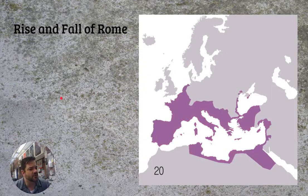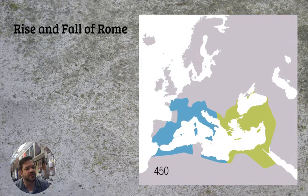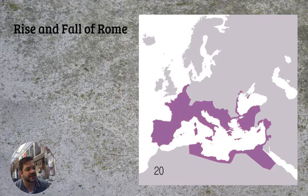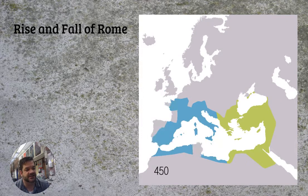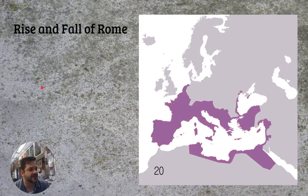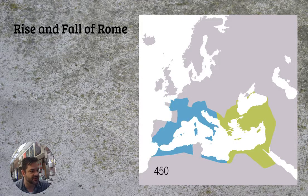The rise of Rome looks something like this. When it changes from red to purple, that's when it changes to the empire. Here's the Republic, the Republic, the Republic, then the empire — and then the empire is going to split as it declines. That's just a little gif on the rise and fall of Rome. I can watch it endlessly. It's fascinating how the borders shift.